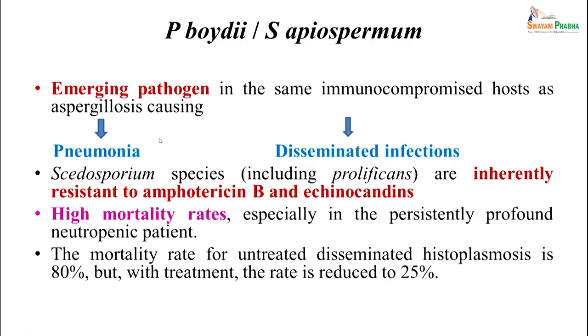Scedosporium apiospermum species are emerging pathogens in immunocompromised hosts similar to aspergillosis, causing pneumonia and disseminated infection. They are inherently resistant to amphotericin B and echinocandins, making identification critical so clinicians are not misled into using ineffective drugs. High mortality is seen especially in profound persistent neutropenia; untreated histoplasmosis and similar infections can have mortality up to 80%, which can be reduced to less than 25% with prompt diagnosis and treatment.